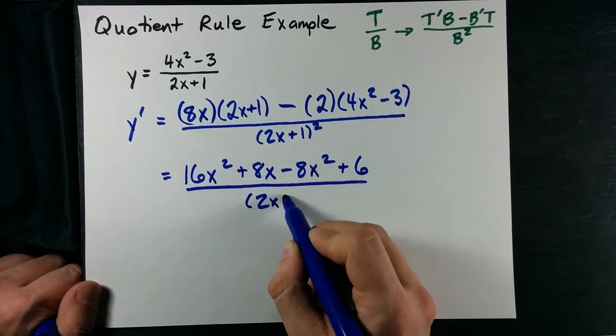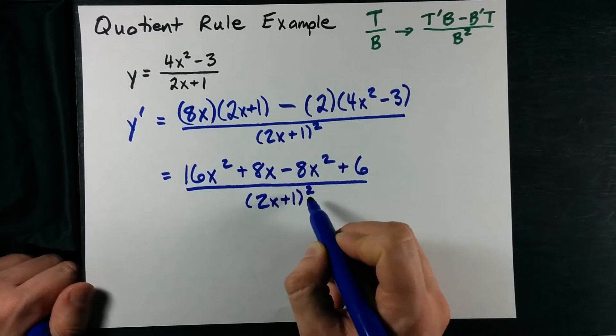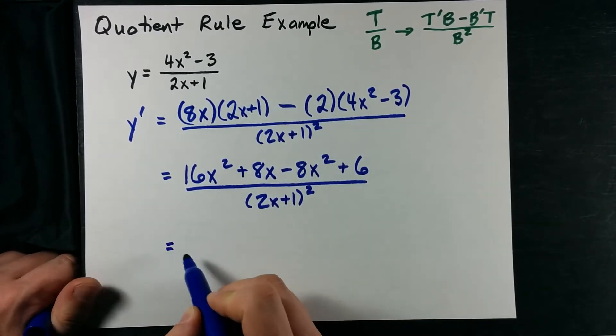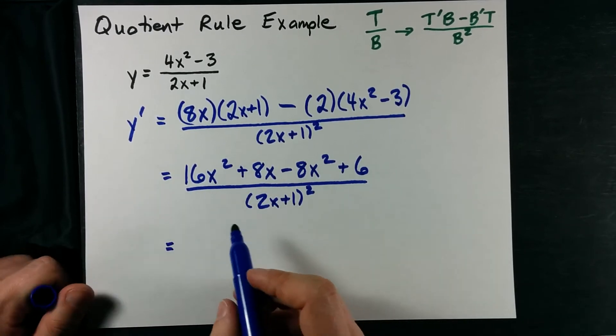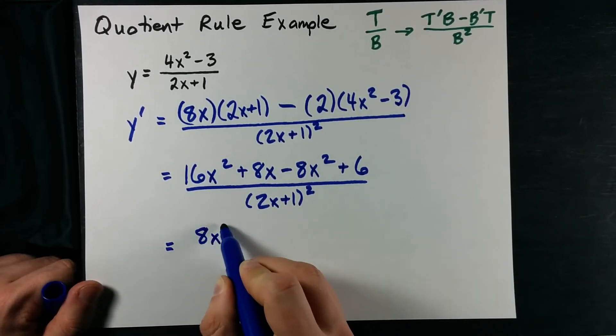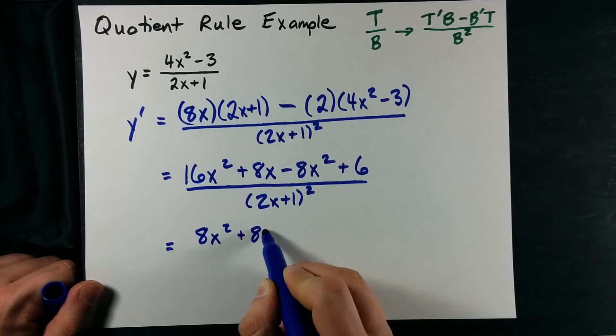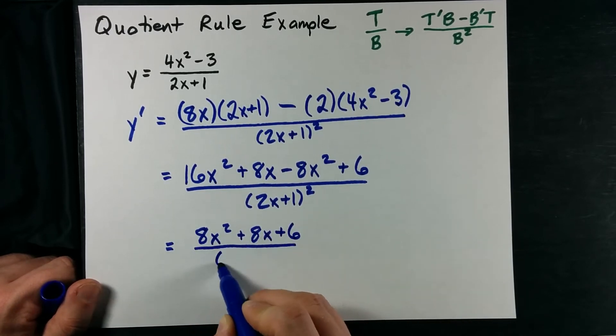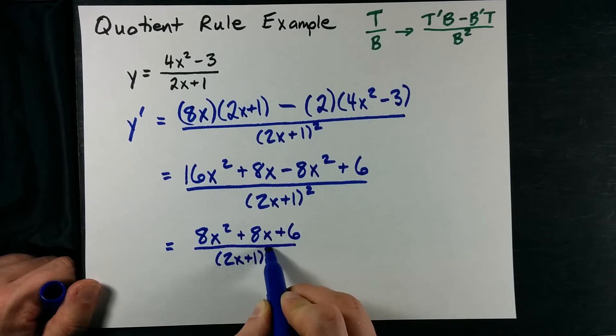All over the bottom, which I like leaving factored to be completely honest. Sometimes I'll get a little cancellation, sometimes not. And when I clean up what's on top here, I get just 8X squared plus 8X plus 6.